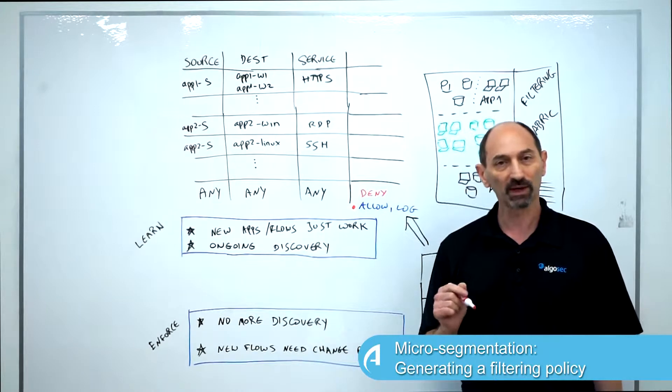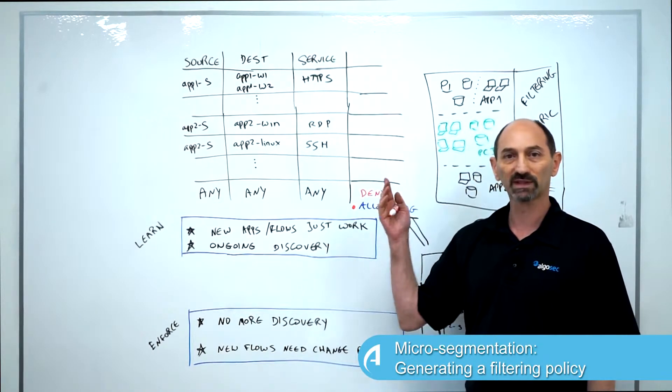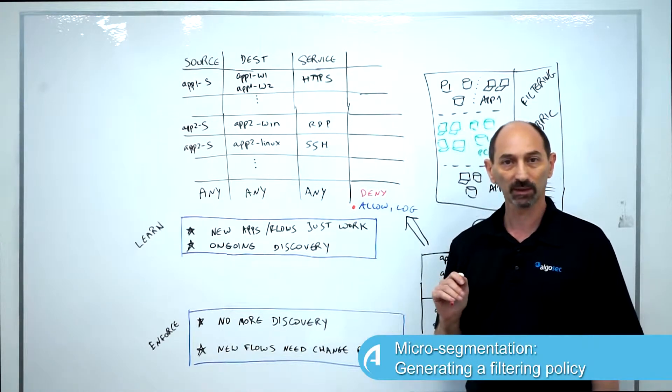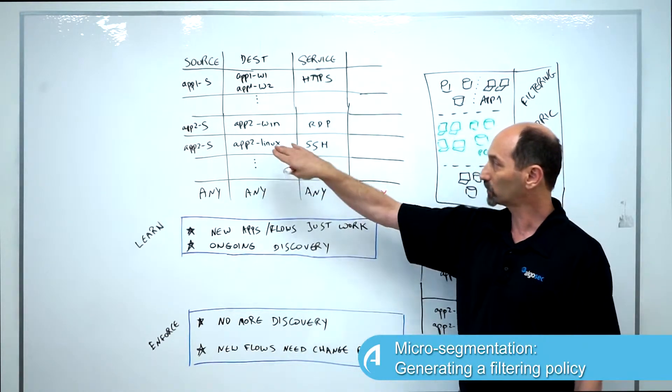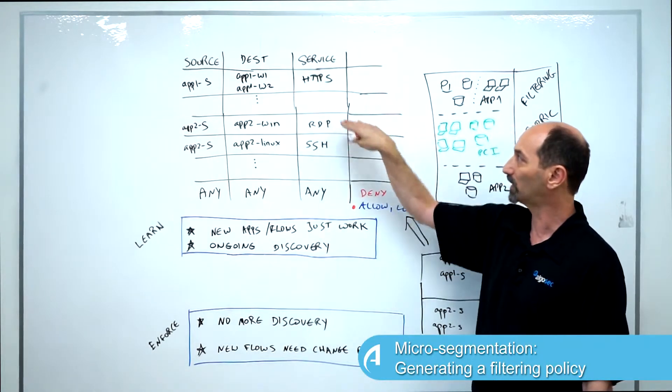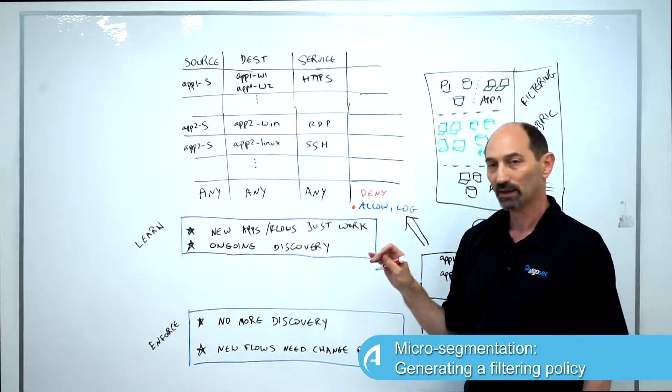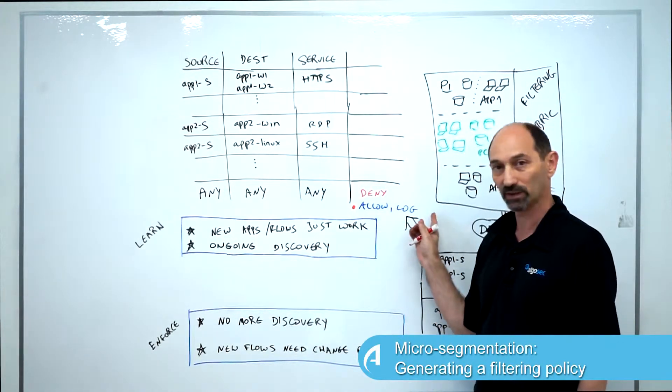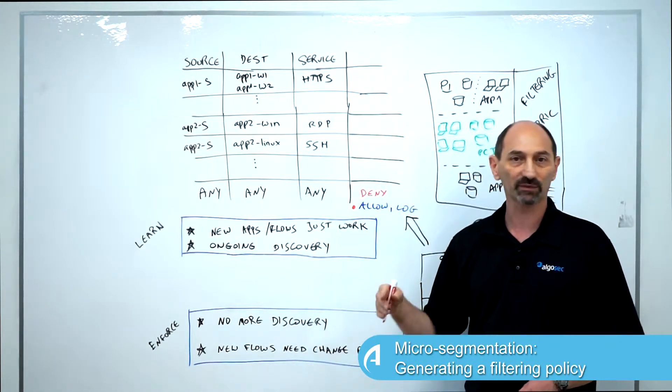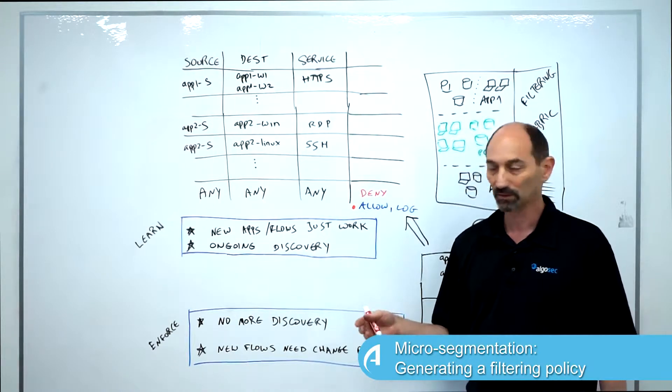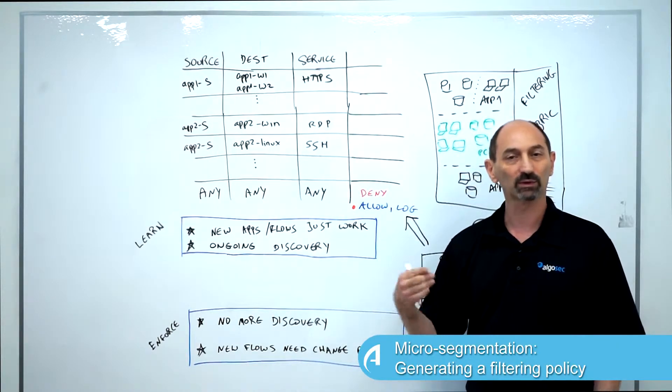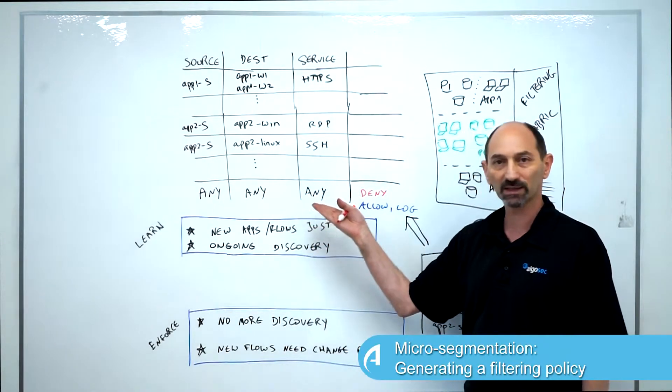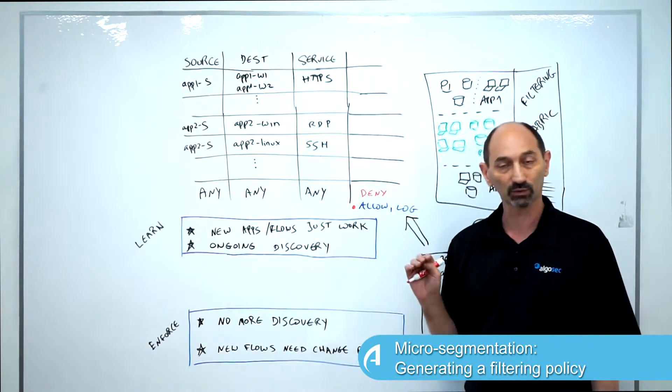What we do by this is that all the flows that we've discovered and are necessary have their explicit rules in the policy and any connection that matches them is going to be matched by the specific rule. Connections that are matched by this temporary allow rule and generate a log, these are flows that we haven't learned yet. So either we just haven't gotten around to learning those flows or they're really malicious traffic. Either way, those are the kinds of flows that hit the final allow rule.